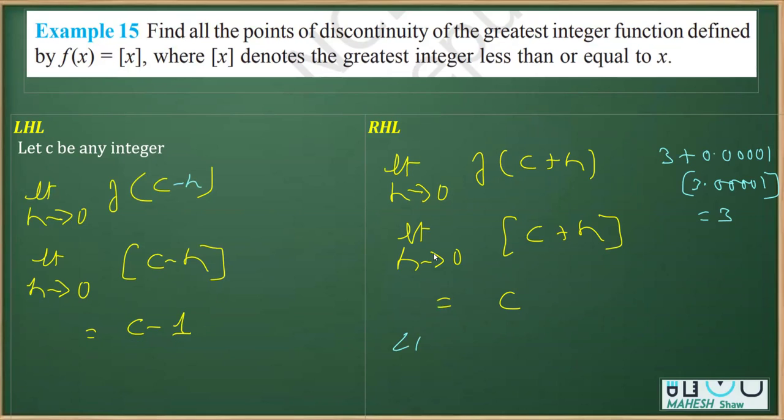Clearly we see that LHL is not equal to RHL. Therefore, this function is discontinuous. The function f(x) is discontinuous